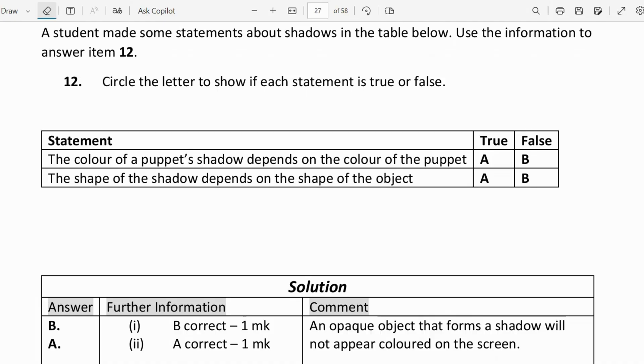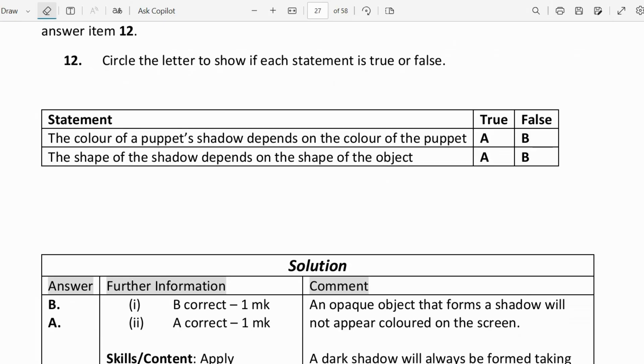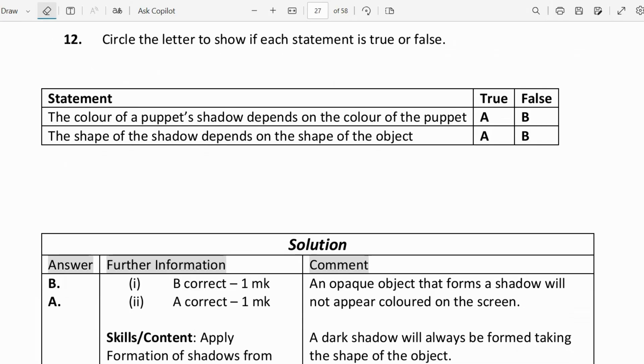Let's look at the next statement: the shape of the shadow depends on the shape of an object. This is true, because a dark shadow will always be formed taking the shape of the object.